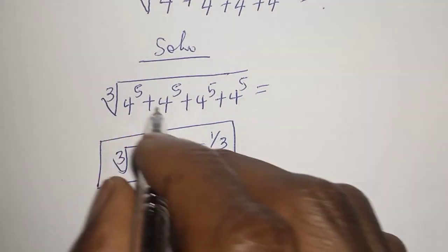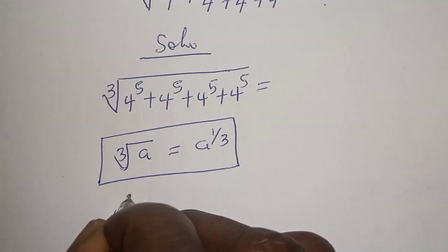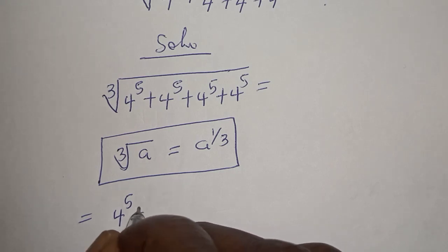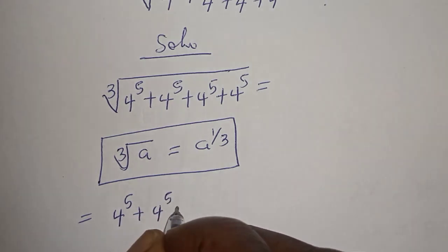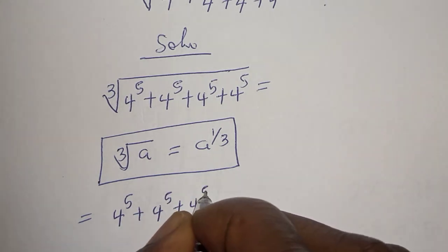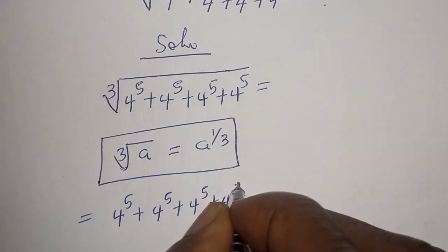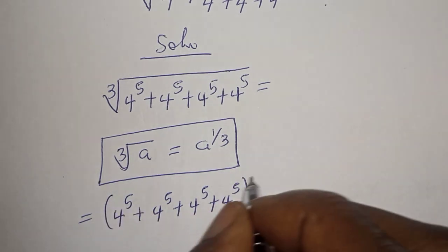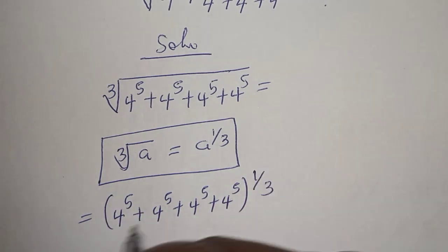Then this expression can be written as: 4 raised to power 5, plus 4 raised to power 5, plus 4 raised to power 5, plus 4 raised to power 5, plus 4 raised to power 5, all to the power of 1 over 3.